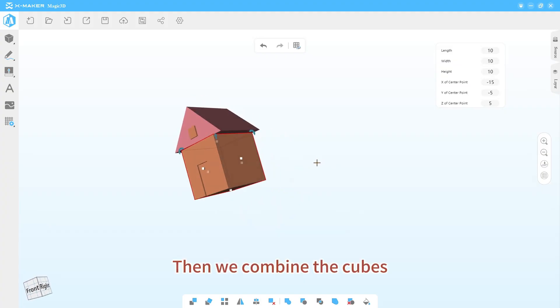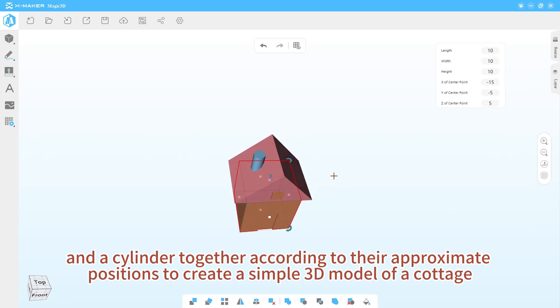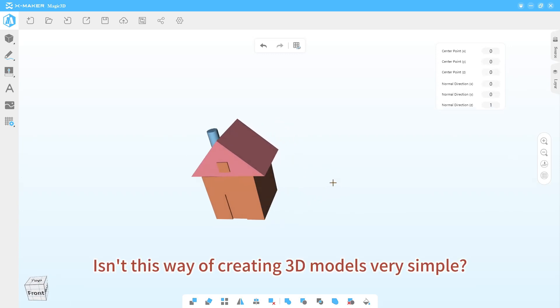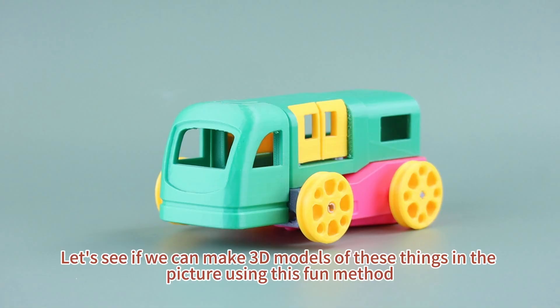Then, we combine the cubes, wedges, and cylinder together according to their approximate positions to create a simple 3D model of a cottage. Isn't this way of creating 3D models very simple? Let's see if we can make 3D models of these things in the picture using this fun method.